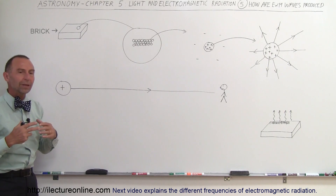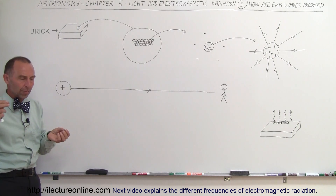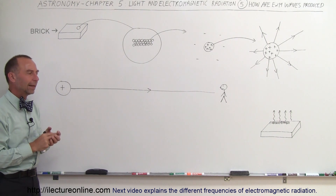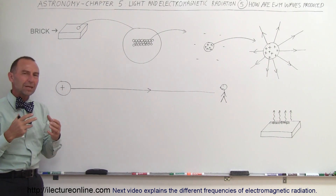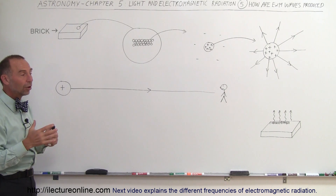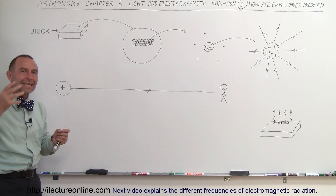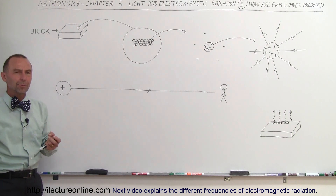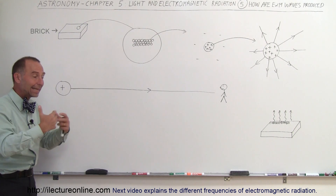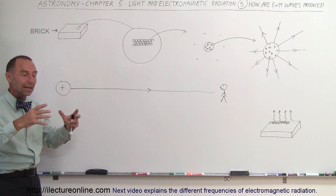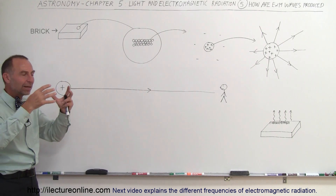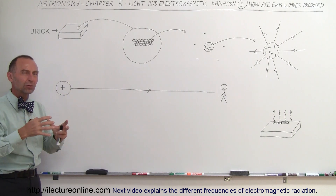An object will be at a particular temperature. You could take a thermometer, touch an object with it, and measure the temperature of that object. Why does an object have a certain temperature? It turns out you can add heat to an object or take heat away from an object. Heat is a form of energy. By adding heat to an object, you make the temperature go up, and if you take heat away, you make the temperature go down.